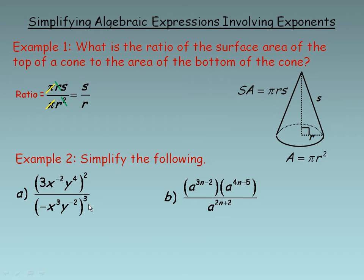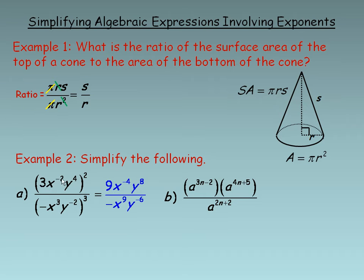Example number two, we are asked to simplify these two expressions. In part a, the first thing I would do is evaluate these two powers. So 3 squared is 9. For x to the negative 2, raised to the power of 2 — remember when you have the power of a power, you multiply the exponents — so negative 2 times 2 is negative 4. And 4 times 2 is 8, so y to the 8th on the end.